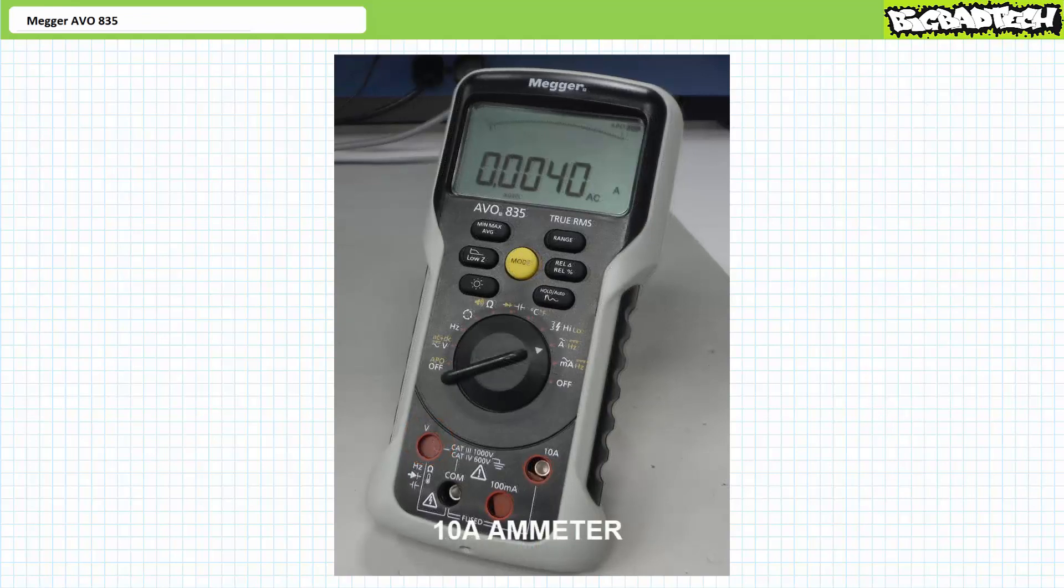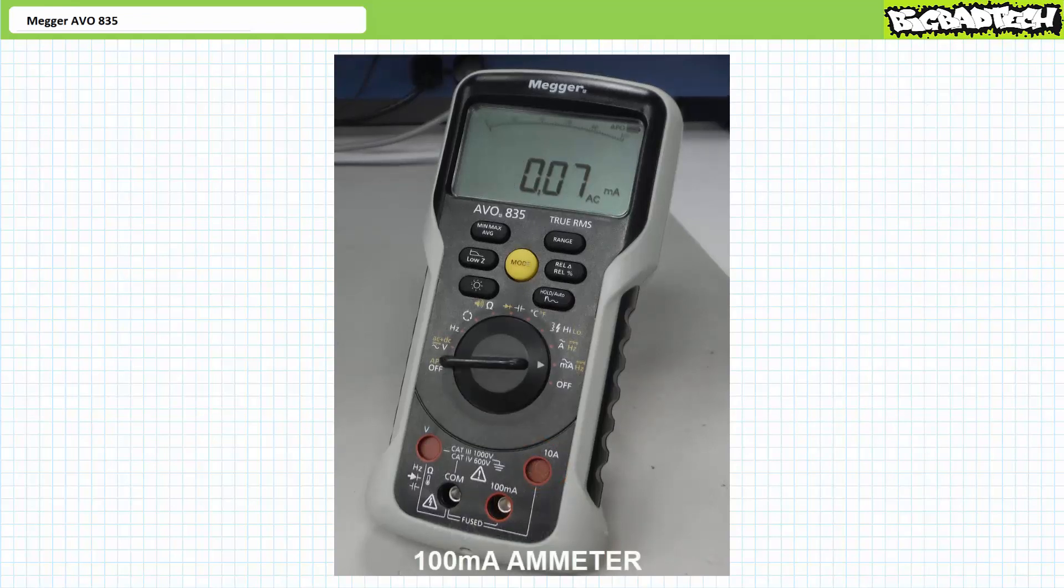In amp ammeter mode, the common and the amp ammeter terminals are open, and the voltmeter terminal is physically covered. Similarly, in milliamp ammeter mode, the common and the milliamp ammeter terminals are open, and the voltmeter terminal is physically covered.